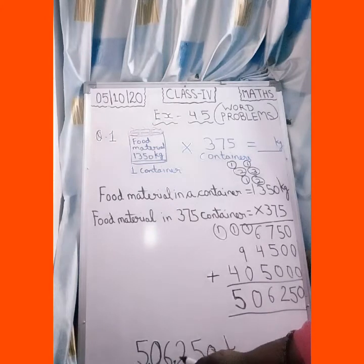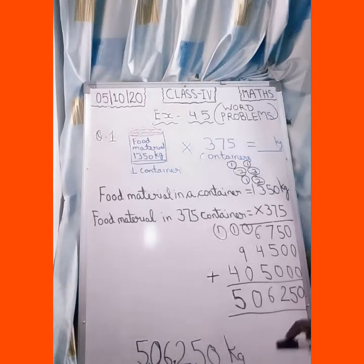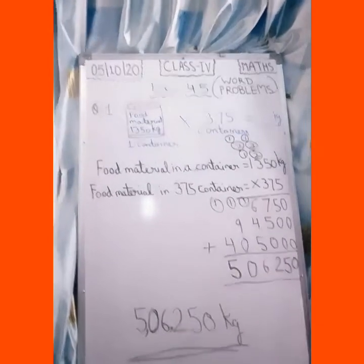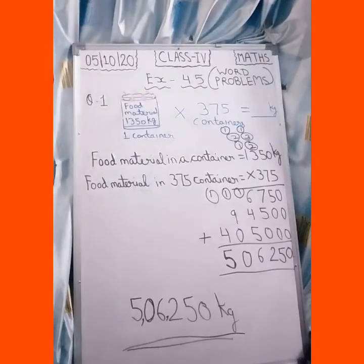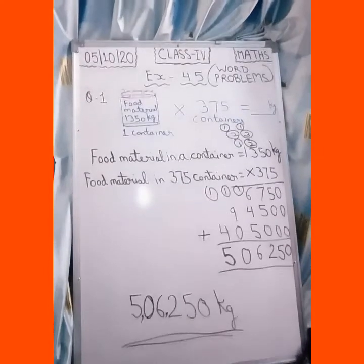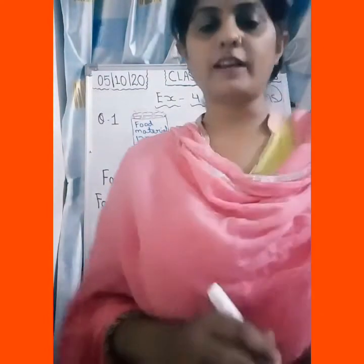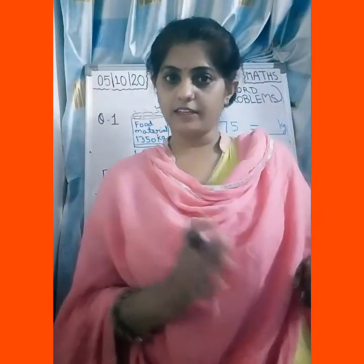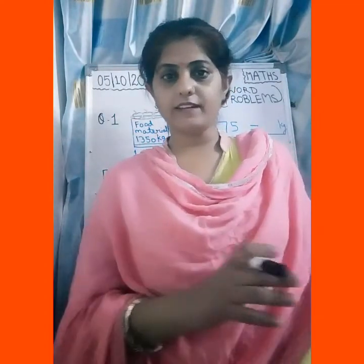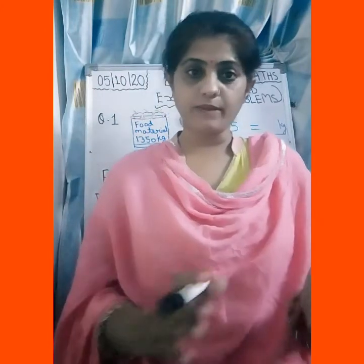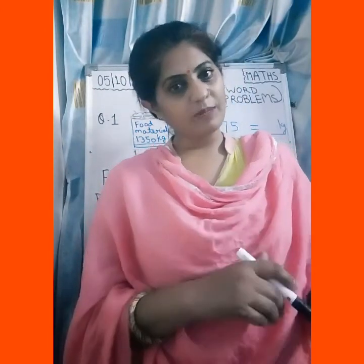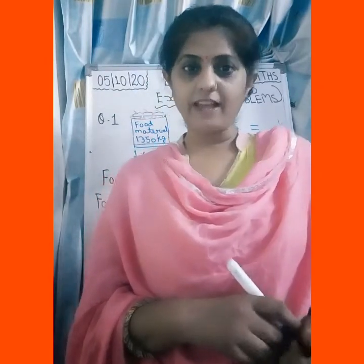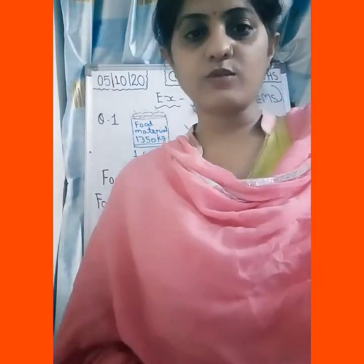So the answer is 5,06,250 kg of food material in 375 containers. Is the question clear? So in this question, we understood that one container had 1,350 kg of food, and we needed to find the total food in 375 such containers. Since all containers have the same quantity, we multiplied both numbers and our answer came to 5,06,250 kg. Now let's move to question number 2.